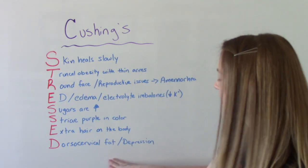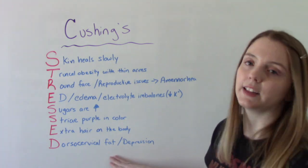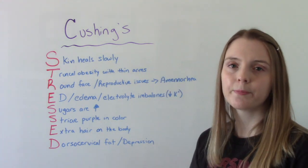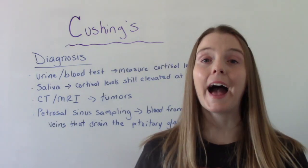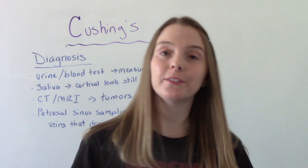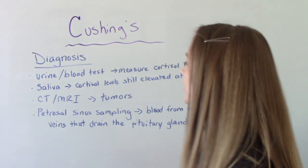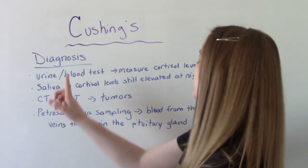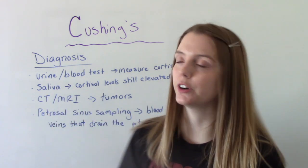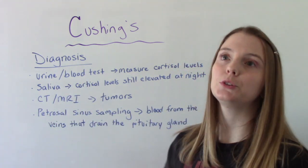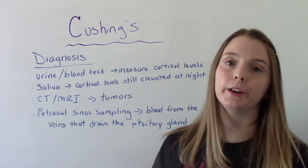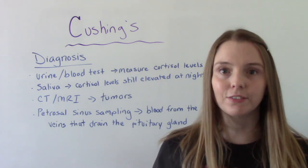Depression is a potential thing that could happen to a patient who has Cushing's. How is Cushing's diagnosed? A couple of things they might want to do: they first will ask you to do maybe a 24-hour urine or take some blood to check the levels of cortisol in your body to see if they're excessive.